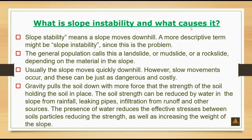Now we will learn what slope instability is and what causes it. Slope stability failure means a slope moves downhill — a more descriptive term might be slope instability. The general population calls this a landslide, mudslide, or rockslide depending on the material in the slope. Usually the slope moves quickly downhill; however, slow movements occur and these can be just as dangerous and costly. Gravity pulls the soil down with more force than the strength of the soil holding it in place. The soil strength can be reduced by water in the slope from rainfall, leaking pipes, filtration from runoff, and other sources. The presence of water reduces the effective stresses between soil particles, reducing strength as well as increasing the weight of the slope.